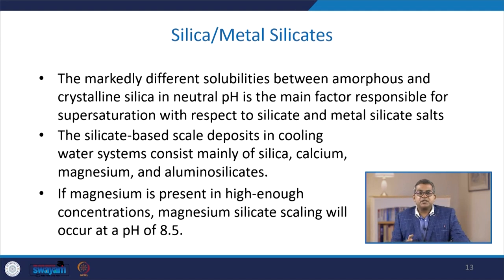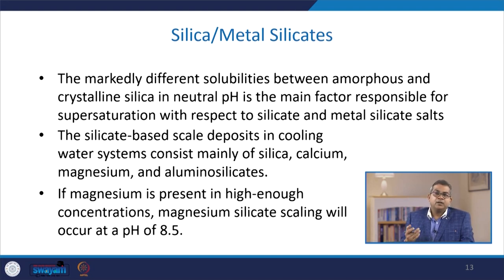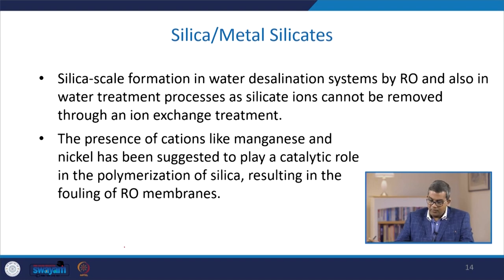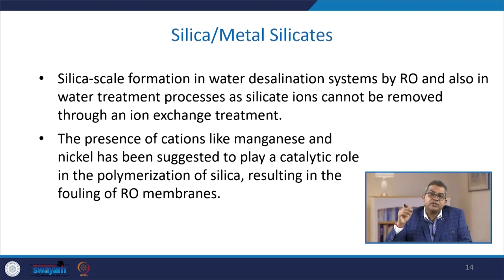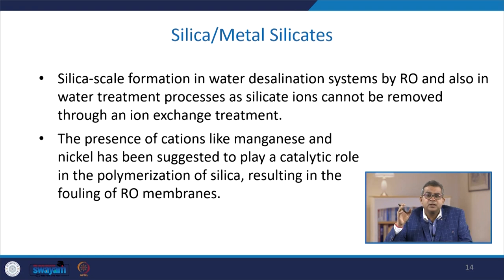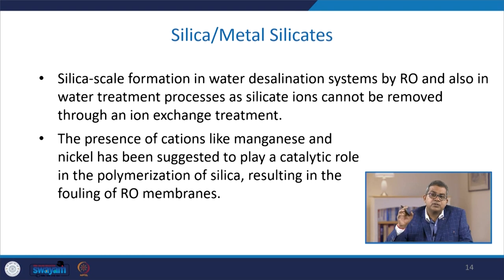If magnesium is present in high enough concentration, magnesium silicate scaling will occur at a pH of 8.5. Silica scale formation in water desalination systems by reverse osmosis and water treatment processes is a concern since silicate ions cannot be removed through ion exchange treatment. The presence of cations like manganese and nickel has been suggested to play a catalytic role in the polymerization of silica, which may result in fouling of reverse osmosis membranes.